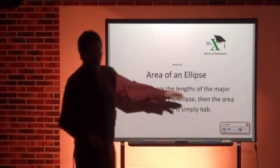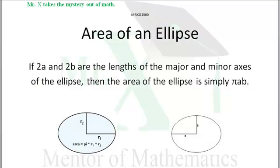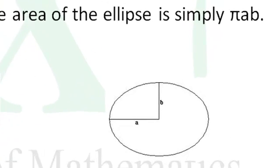Hi, Mr. X with glossary term area of an ellipse. If 2a and 2b are the lengths of the major and minor axes respectively, then the area of the ellipse is π*a*b. It's a pretty easy formula.